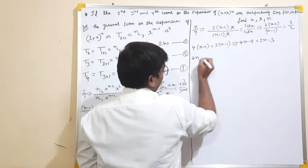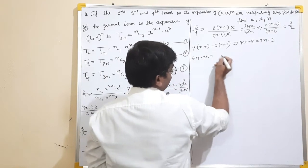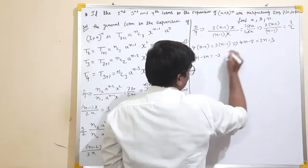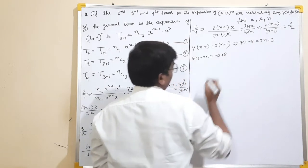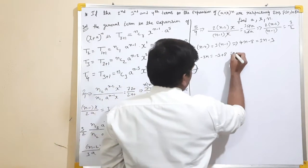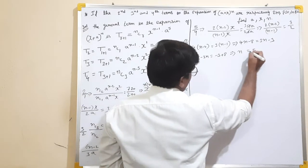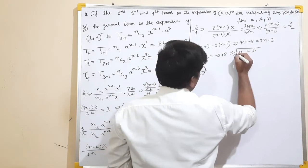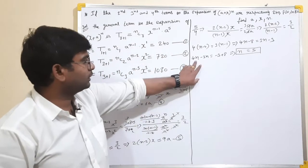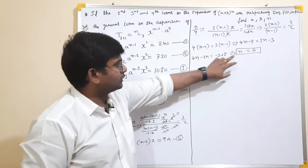So: 4N equals minus 3N, and minus 8 equals plus 8 — solving this problem. Therefore N is equal to 5. So N equals 5 is the value.